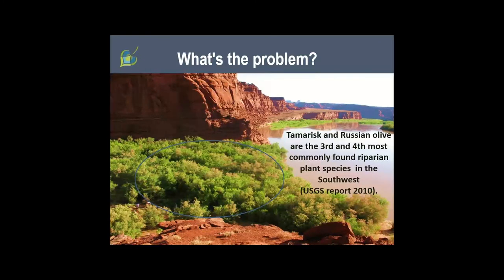What's the problem? Our organization works on riparian areas impacted by invasive plant species. In the arid west, one startling piece of information is that tamarisk and Russian olive comprise the third and fourth most commonly found riparian plants in the Southwest, meaning our rivers and riparian areas are greatly impacted by invasive plants. Most of you have chosen to address these issues and tackle invasive plant species impacting our riparian and river health.